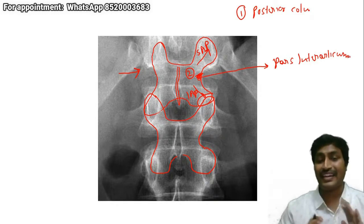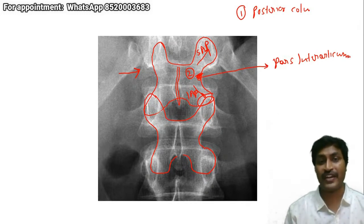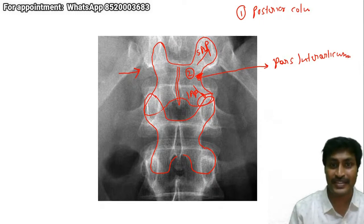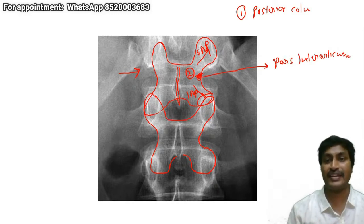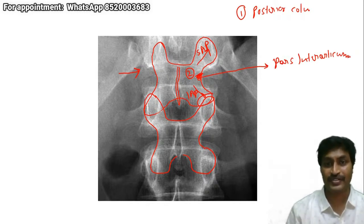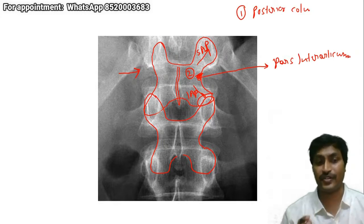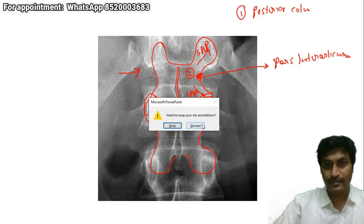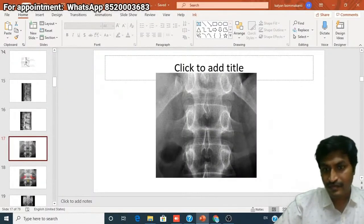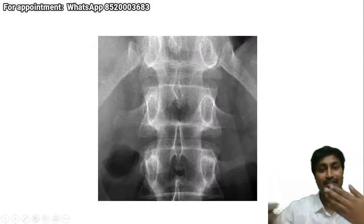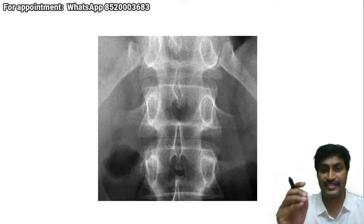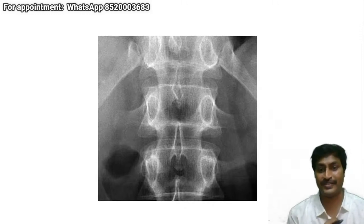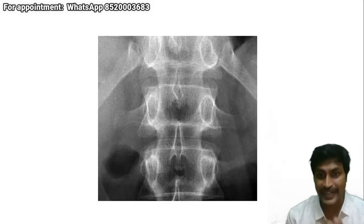Like Arjun in the Mahabharata who could identify only the eye of the bird, when looking for posterior elements you must identify this butterfly. Everything within the butterfly represents the posterior elements: spinous process, lamina, superior articular process, inferior articular process, and most importantly the pars interarticularis. In the same AP view, all three layers are superimposed, so identify each step by step. In the first step I identified the posterior elements — the butterfly. In the second step I identify the pedicle, which is very easy.